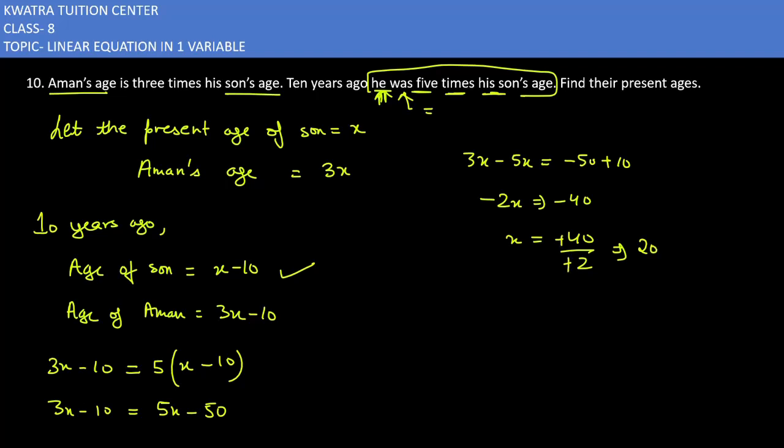So, what will be the present ages? Present age of sun would be x which is 20 years old, and 3x, change 3 into 20, 60 years old. So, age of sun is 20, age of Aman is 60.